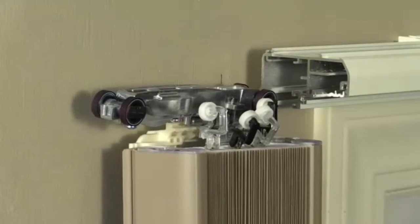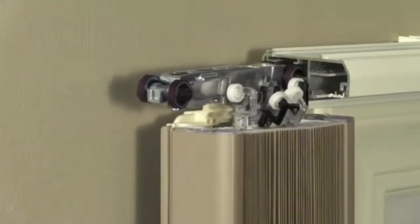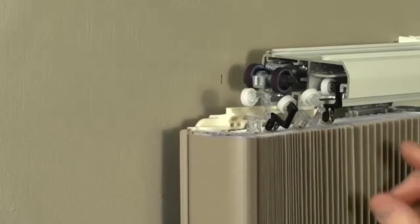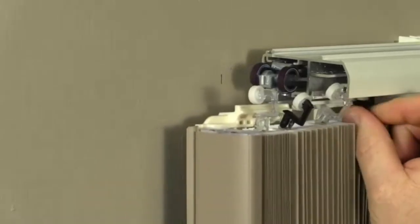Slide the wheels of the moving rail bracket part way into the rear track of the head rail. Then, insert the fabric carrier wheels into the head rail.